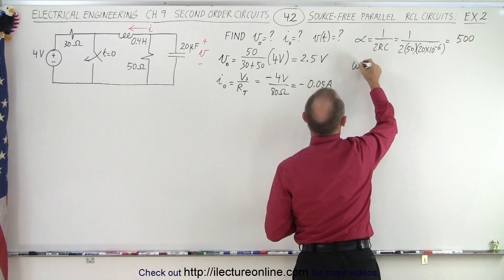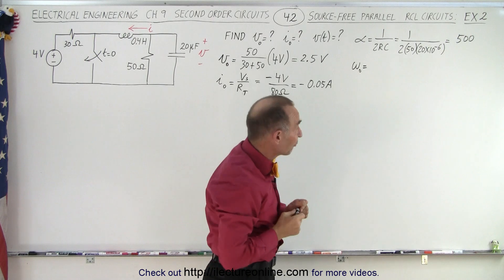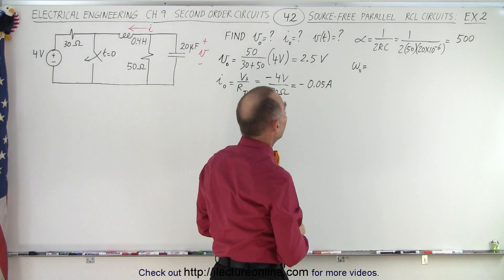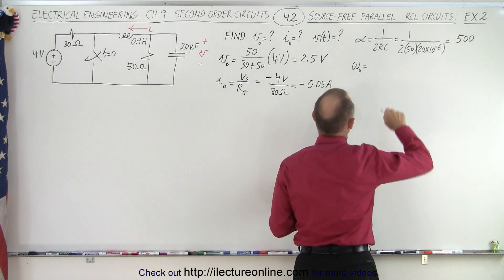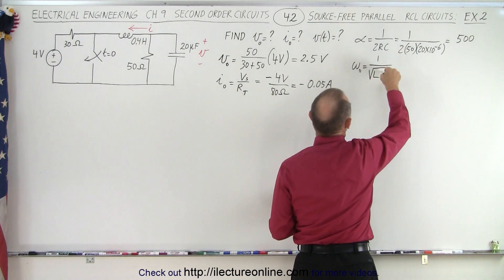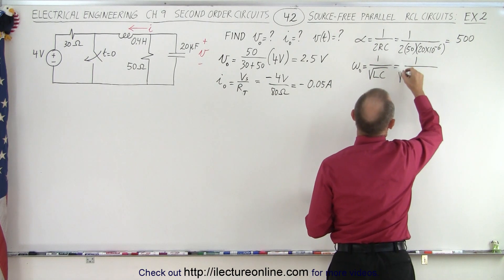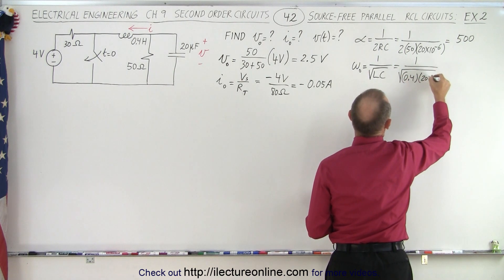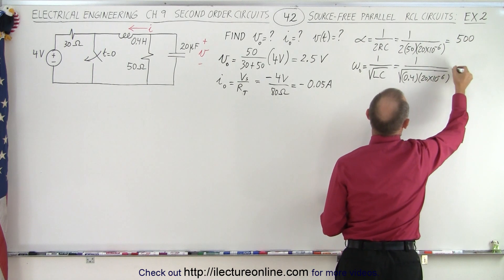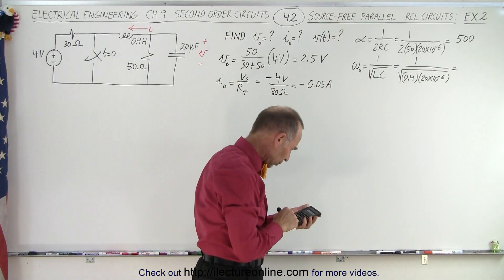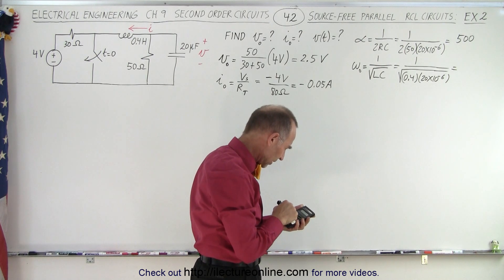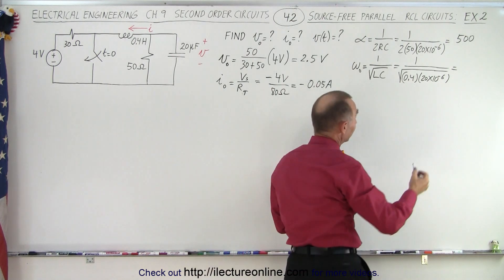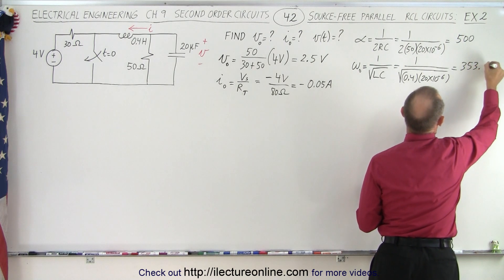And then omega sub naught, which of course is the natural frequency of the circuit, if there's no resistance there. So what is that equal to? 1 over the square root of LC, which is equal to 1 over the square root of L, which is 0.4, and C, which is 20 times 10 to the minus 6, which is equal to, let's see, 0.4 times 20E6 minus equals, take the square root, take the inverse, and it's 353.55. Let's call it 353.6.